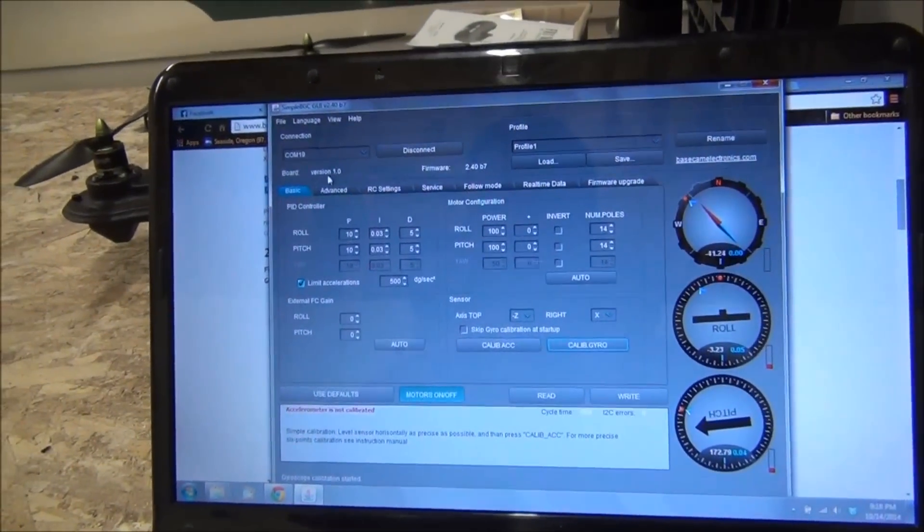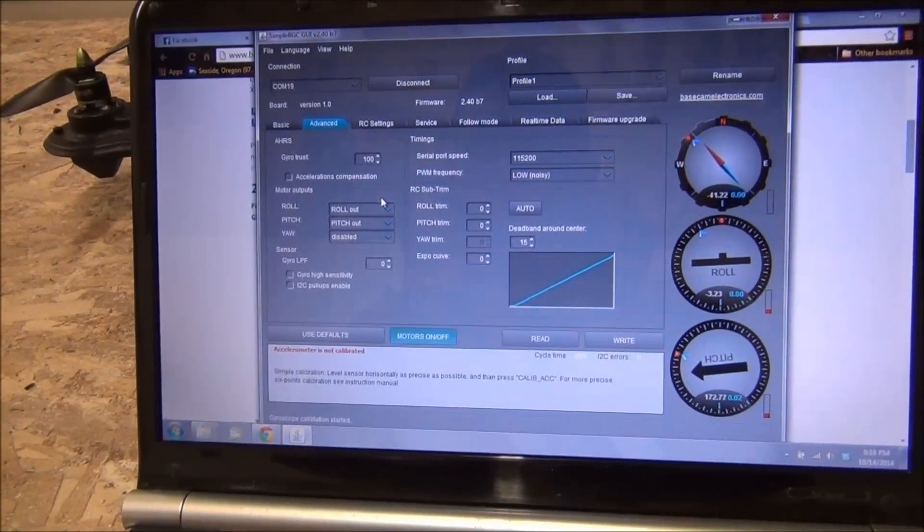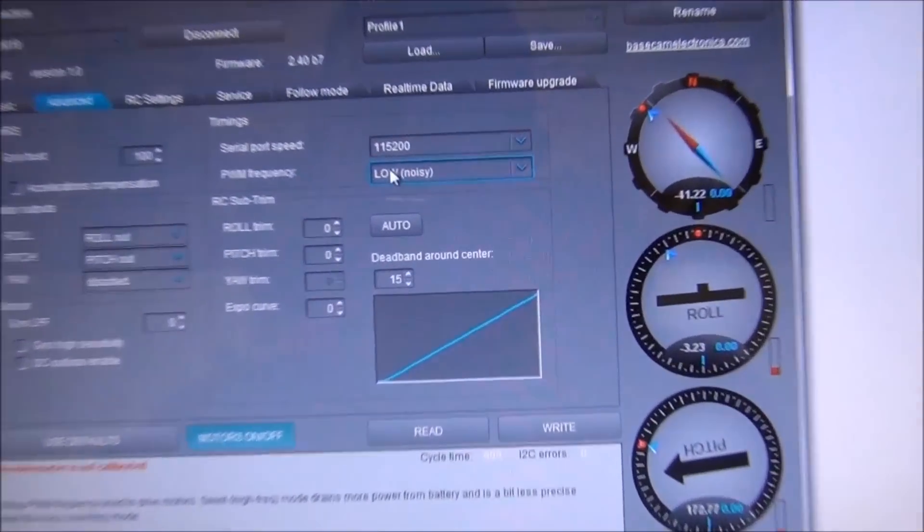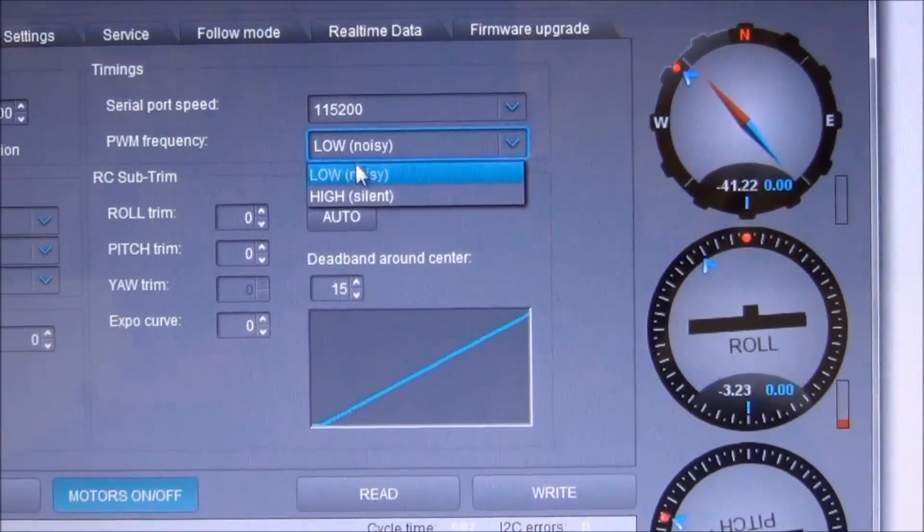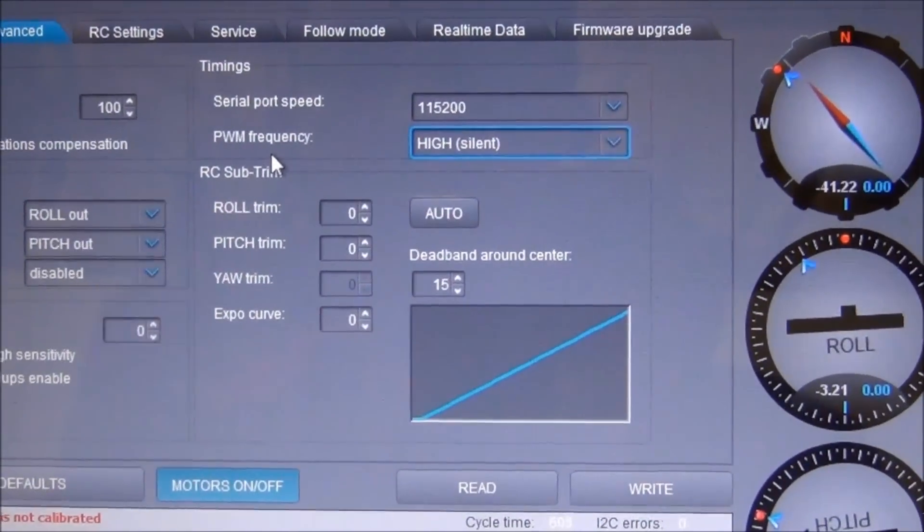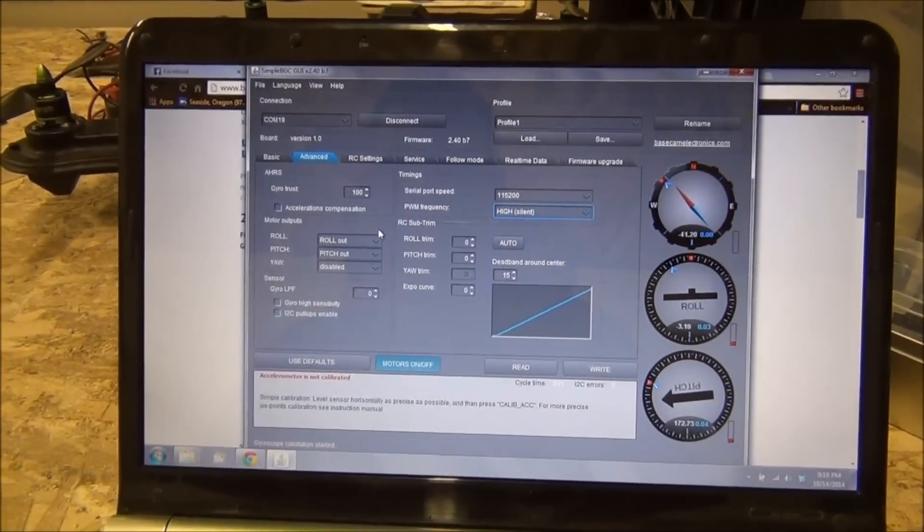So next step, we're going to go over to the advanced tab. The noise that we were hearing, that high pitch squeal, that can be fixed by going right here and selecting the high frequency pulse width modulation frequency to the motors. And that just changes the frequency to something that's not audible to our ears.